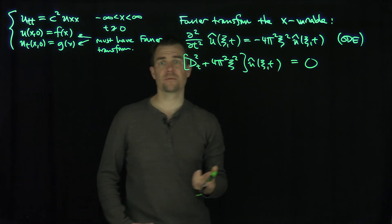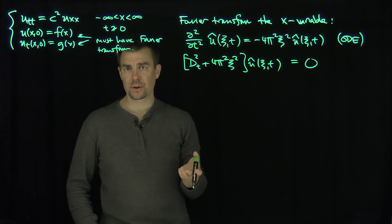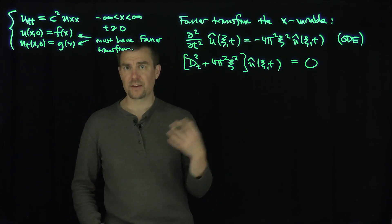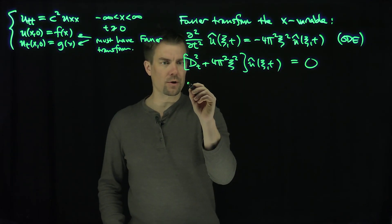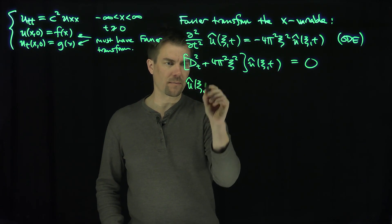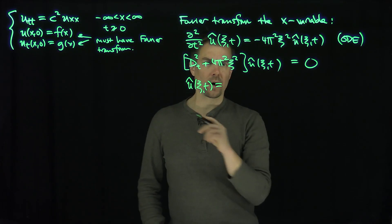And from ODE theory, we know that when you have d squared plus a squared is equal to zero, you get cosine of at and sine of at as your solutions over here. So our solution to this, therefore our U hat of xc and t is going to be what?